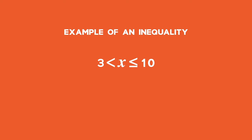In interval notation, a round bracket excludes the number and a square bracket includes a number. An example of an inequality would be x is greater than 3 and less than or equal to 10. In interval notation,